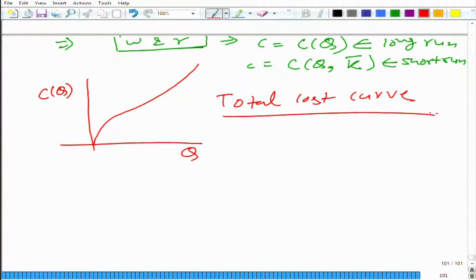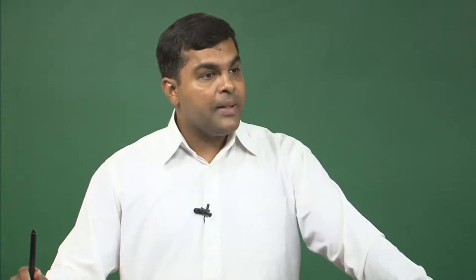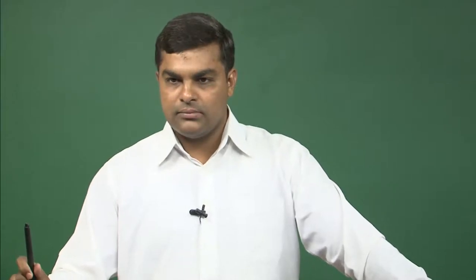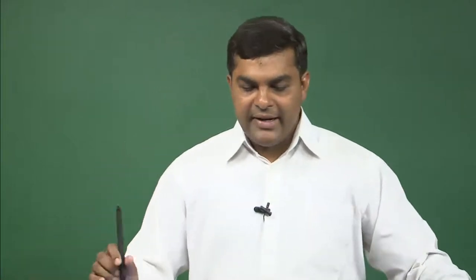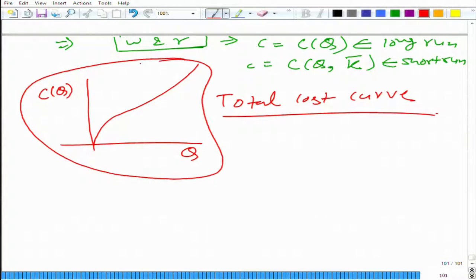What does the total cost curve give us? It gives the minimum cost of producing q. That is the important word — not just the total cost of producing q amount of output, but the minimum cost to produce q amount of output. Never forget this minimum part; it is quite important. When we get this curve, we assume the firm has already minimized its cost, and we are talking about only those combinations of inputs which minimize the cost of production.